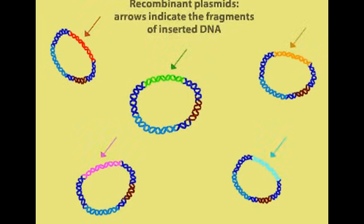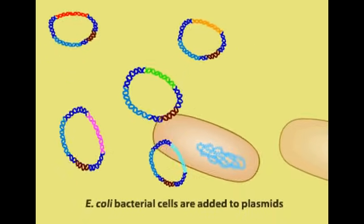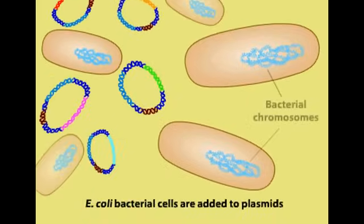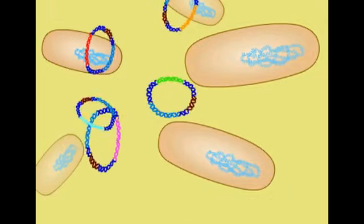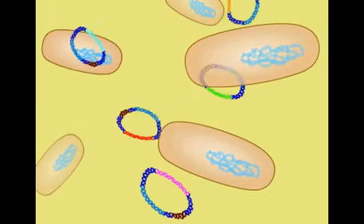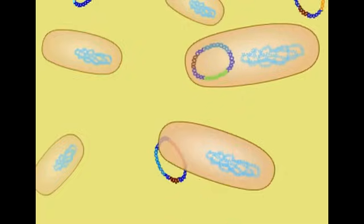Next, the host cells, E. coli bacteria, are added to the recombinant plasmids. The cells have been treated with calcium chloride to make them permeable to DNA molecules. Through a process called transformation, a few cells take up a recombinant plasmid, while most other cells do not.